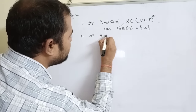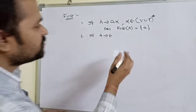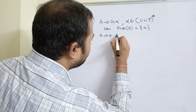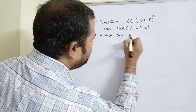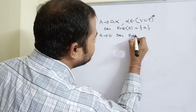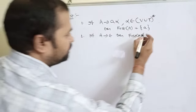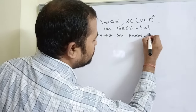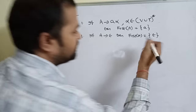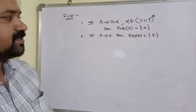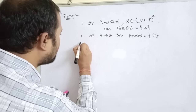The second rule is: if A implies epsilon, then FIRST of A contains epsilon.